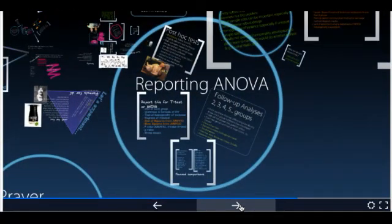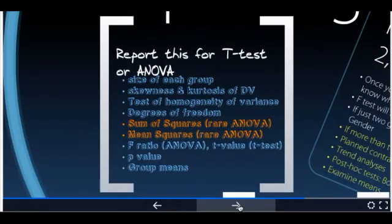So what do you do when you run an ANOVA? How do you report that? One of the things you need to report is the size of each of your groups. If you have three groups, you need to report how many people are in each group or rats or whatever you're running. You do need to look at the skewness and kurtosis of your dependent variable.